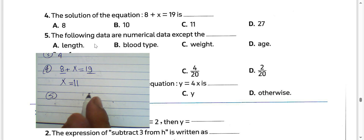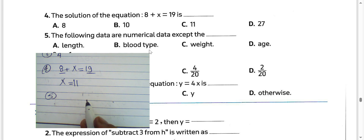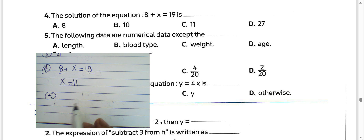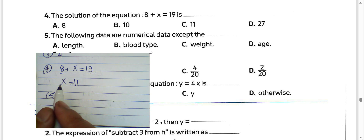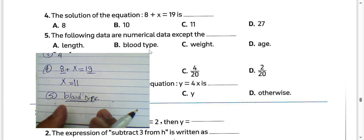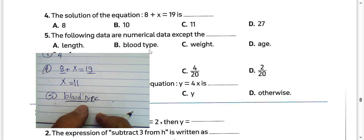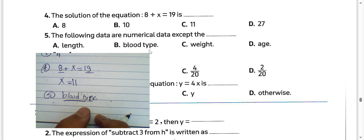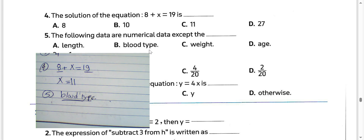Question number 5: the following data are numerical data — except which plot type? We have two types of data: numerical data and descriptive data. Descriptive data would be the plot type. You must know the types of data. Descriptive data includes plot type, while numerical data includes things like weights and age. So you must choose letter B.